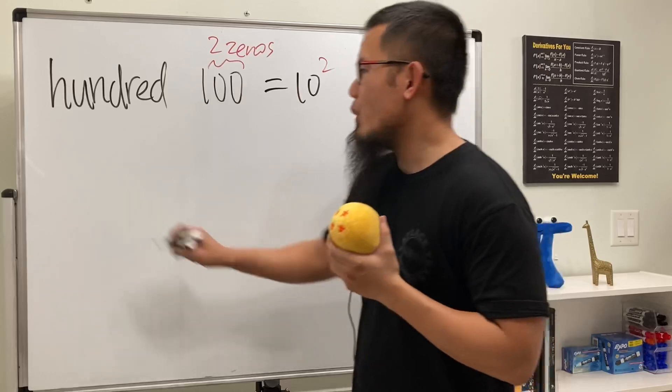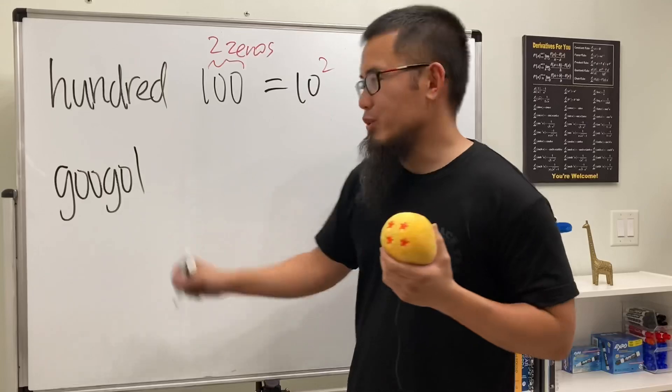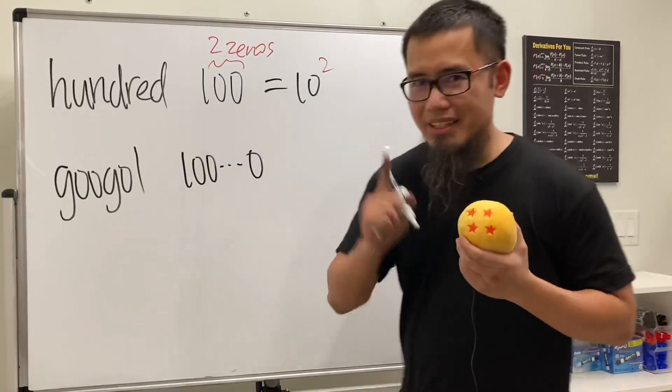Now the second question is, do you know what googol means? Googol spelled this way: G-O-O-G-O-L. I'll give you five seconds. Five, four, three, two, one. The answer to this right here is one with some zeros at the end as well, but how many? Yes, a total of 100 zeros.